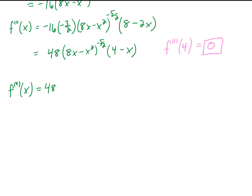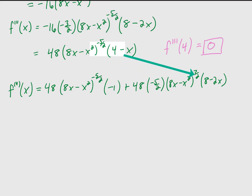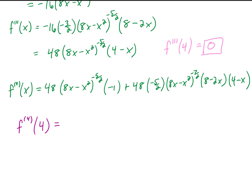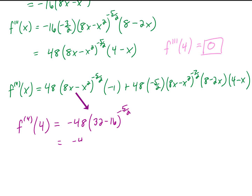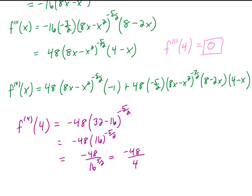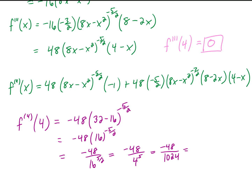The fourth derivative requires the product rule since we have a product of two functions. We copy down the first function and differentiate the second, then differentiate the first and multiply by the second. When we plug in x equals 4, the (4 minus x) factor makes the first term go to 0, leaving us with negative 48 times 16 to the negative 5/2 power. Since 16 to the 5/2 is the square root of 16 to the fifth — that's 4 to the 5th, or 1024 — simplifying gives us f''''(4) equals negative 3/64.